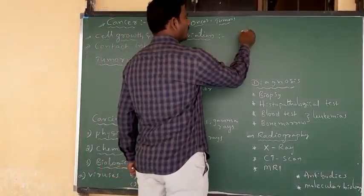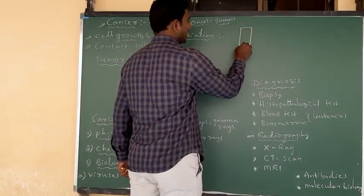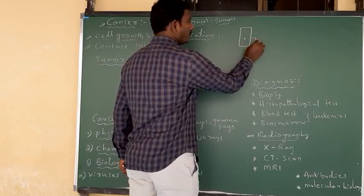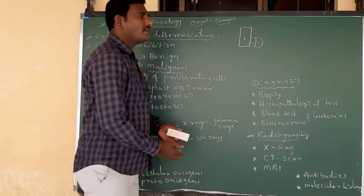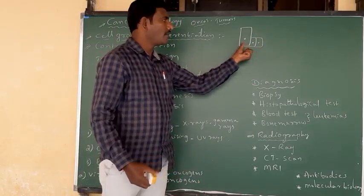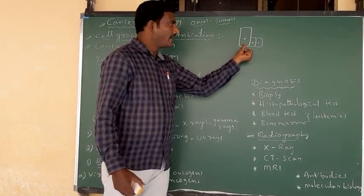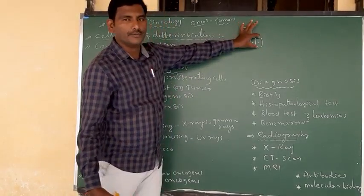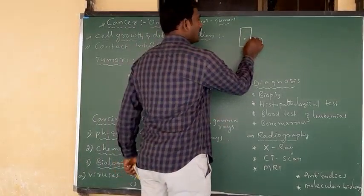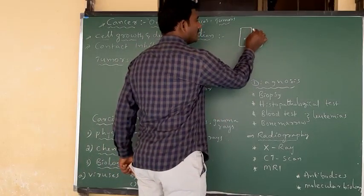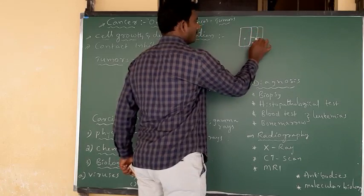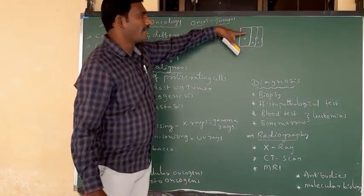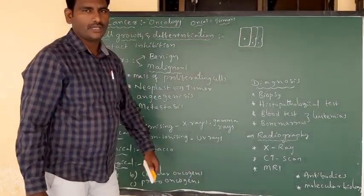For example, when we are talking about a healthy person, that person's body cells — this is a normal body cell. This normal body cell undergoes mitotic division and produces two daughter cells. When we compare the sizes of these daughter cells to the parent cell, the newly formed daughter cells are very small, but after some days they gradually increase in size.